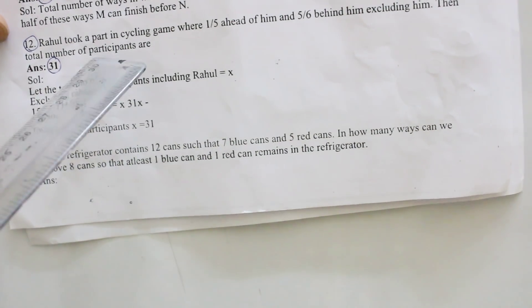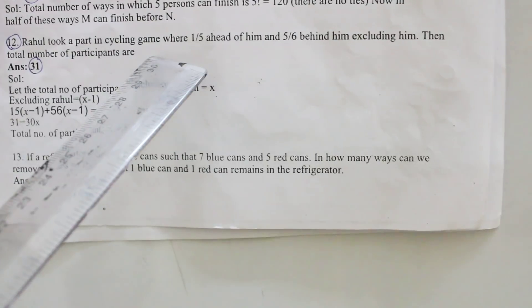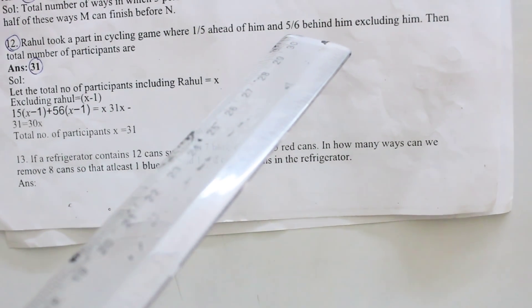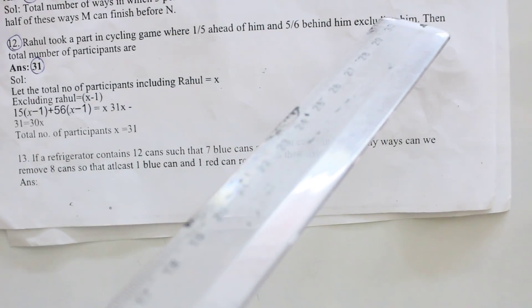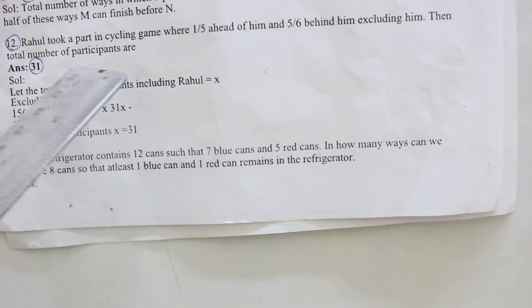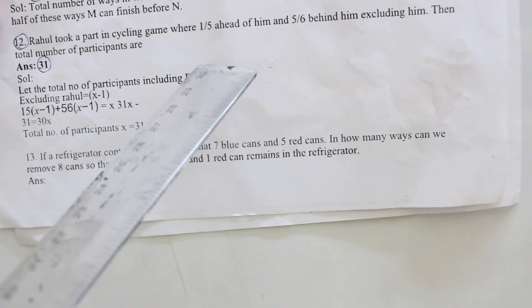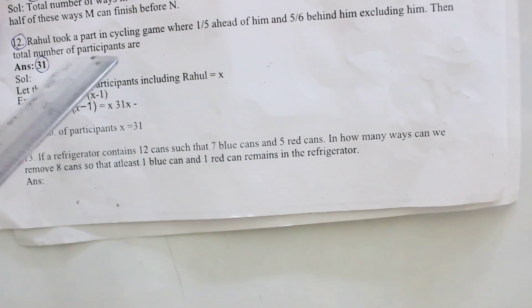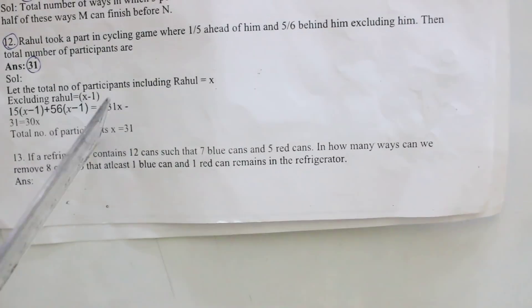Next twelfth one: Rahul took a part in a cycling game where one-fifth of ahead of him and five-sixth behind him excluding him. Then total number of the participants are? This question, your answer is 31. This question is option to follow, easily solve this one.